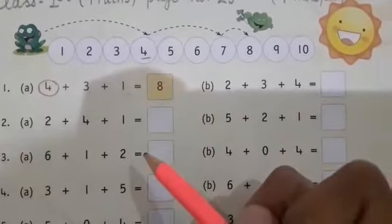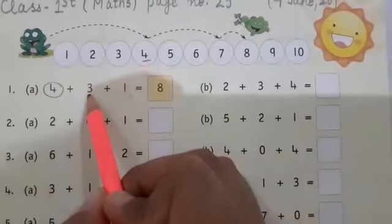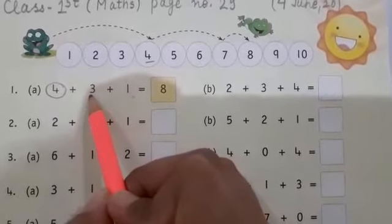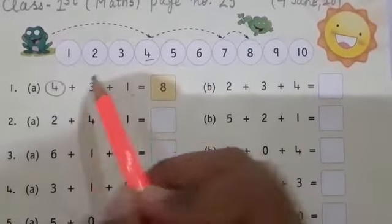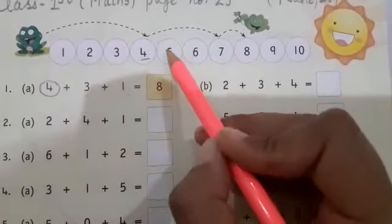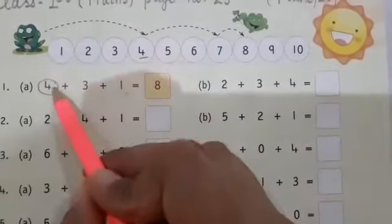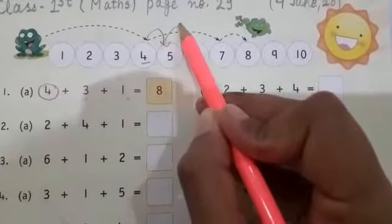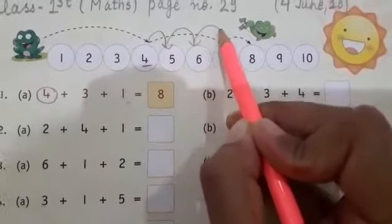After that, what do you do? Your next number, you jump that many times. That means here we will jump three times. So if we jump three times after four: one, two, and three.